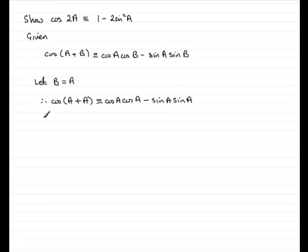So what have we got here? Instead of cosine of A plus A, we've got the cosine of 2A. Cos 2A is identical to cos A times cos A, and we can write that as cos squared A. And similarly, sine A times sine A can be written as minus sine squared A.